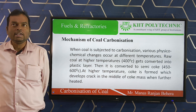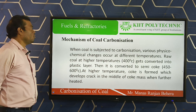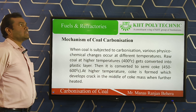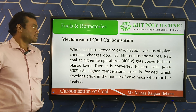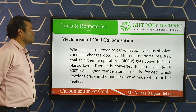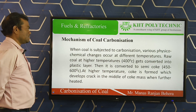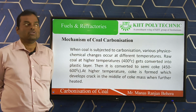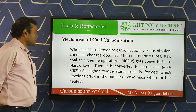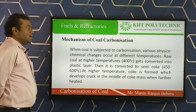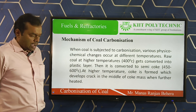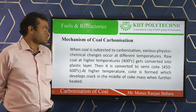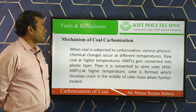Then we slowly increase the temperature to around 350 to 400 degrees centigrade. When the coal is heated at this temperature, various physico-chemical changes occur, and the raw coal slowly starts to fuse. At around 400 degrees centigrade, when the coal fuses and the temperature is further increased, a plastic layer is formed. This plastic mass is very soft.